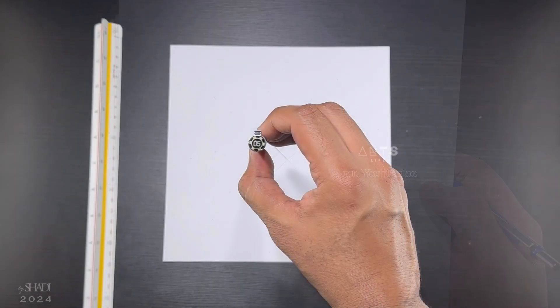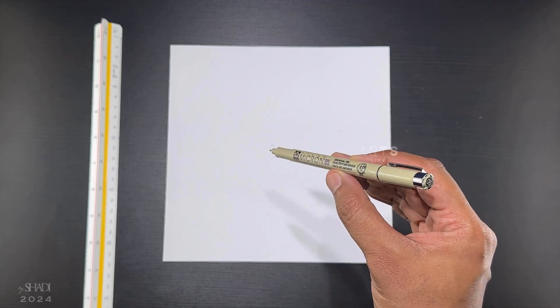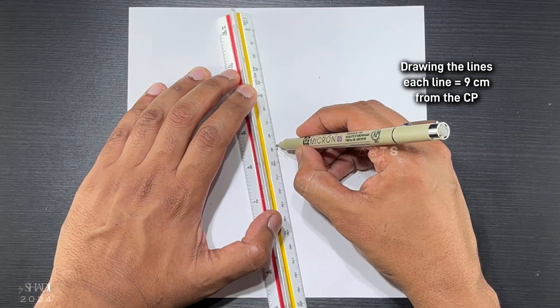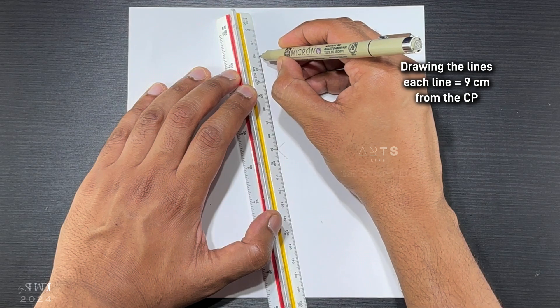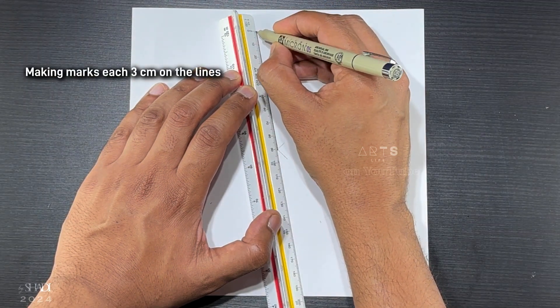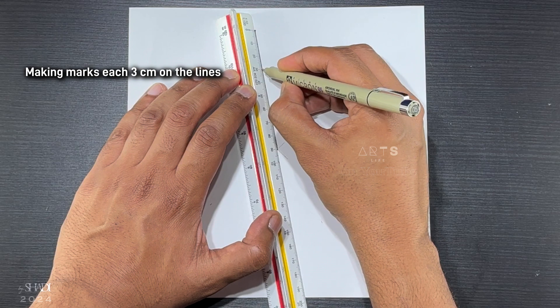Now I will draw lines repeatedly from the center point through the angle's marks. Each line equals to 9 centimeters and make marks each 3 centimeters on every single line as following steps.